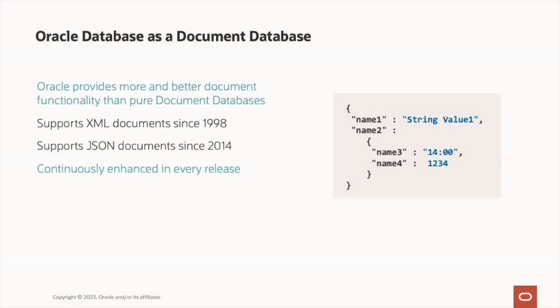Oracle database customers typically turn to JSON to solve three business use cases. One, for storing attributes associated with a row of data — for example, when working with machine learning, where there may be many different attribute combinations to support an individual AI model. Or two, for application extensibility via flex fields — for example, when extending an existing application to support additional fields of information without the necessary requirement of changing the data model or UX of the application.